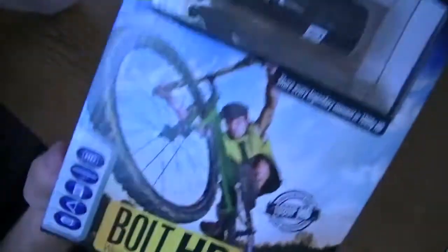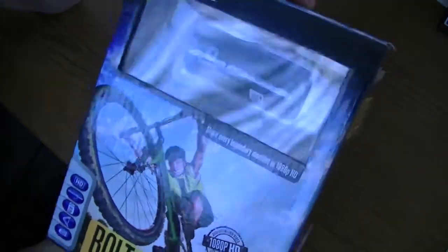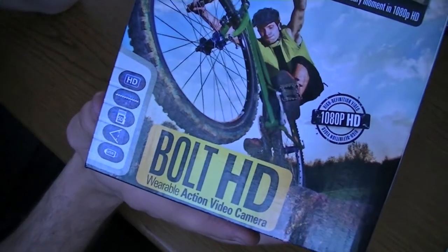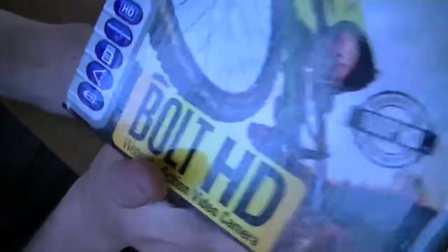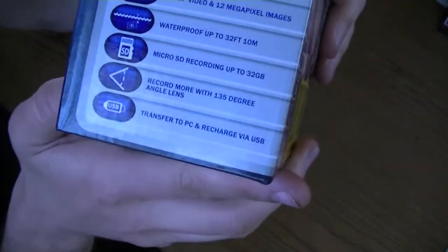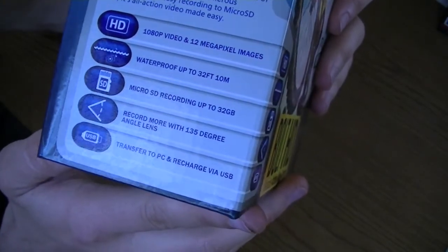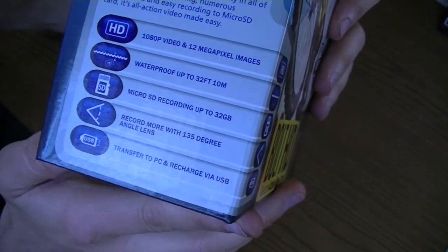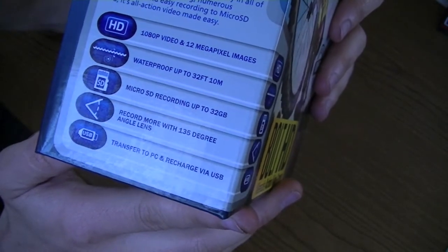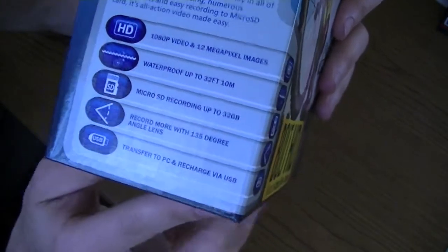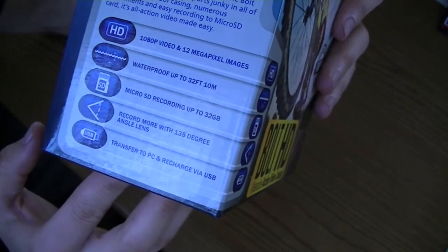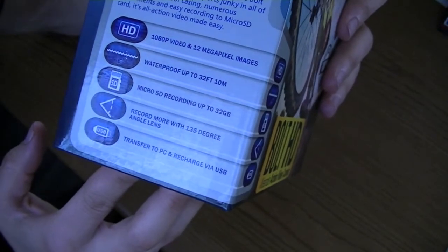Alright so here's a little bit of a close-up. Bolt HD. And here's some of the specs right here. 1080p video, 12 megapixel still images. It's waterproof up to 32 feet or 10 meters. It uses a micro SD card just like the new GoPro. And it's got a 135 degree wide angle lens.